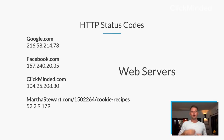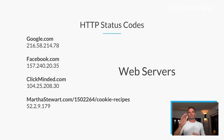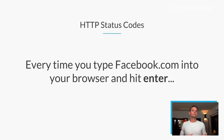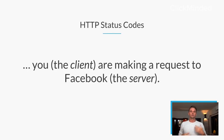Whenever you go to a website, you're making a request to a web server. For example, 216.58.214.78 — Google.com is actually much easier to remember. Every time you're going to Google.com, you're actually making a request to that IP address. Facebook, ClickMinded.com, a specific recipe website — all of these have their own IP address. Whenever I access one of these sites, I'm accessing it via my client, Google Chrome, and I'm accessing that web server.